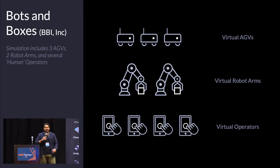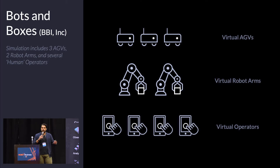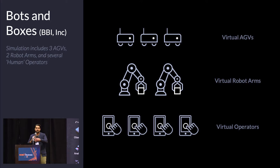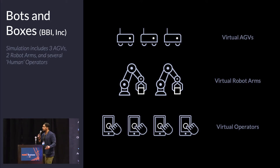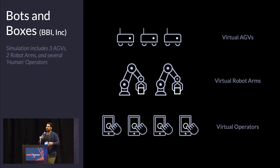We have this big company called Bots and Boxes where we sell and ship fuses and sprockets — components absolutely essential for robotics. Every warehouse has three AGVs, a very classic type AGV you see a bunch of at the conference, a couple of robot arms, and a couple of human operators that introduce some level of entropy into the system.